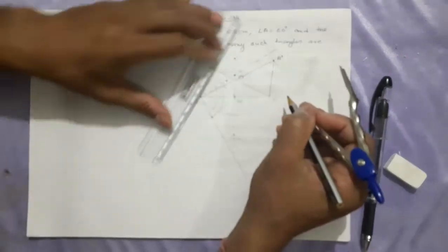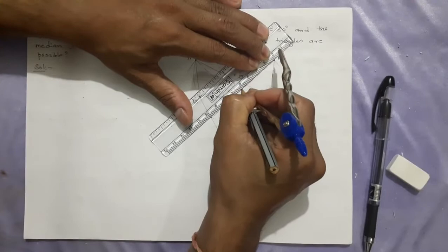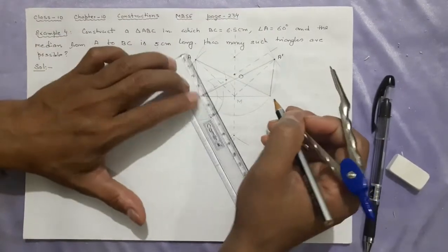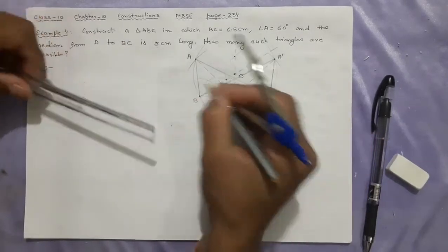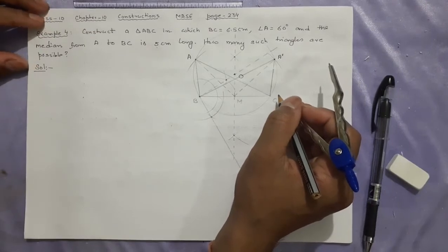And I will join A dash C. The median is this one, AM is the median. For this triangle A dash BC, this will be the median. Its median's length will be what we have taken, 5. See? Look at here. Verify it. 5. After doing, you can see angle BAC is also 60 degrees. That is how you can do it. Let's write the steps of construction.